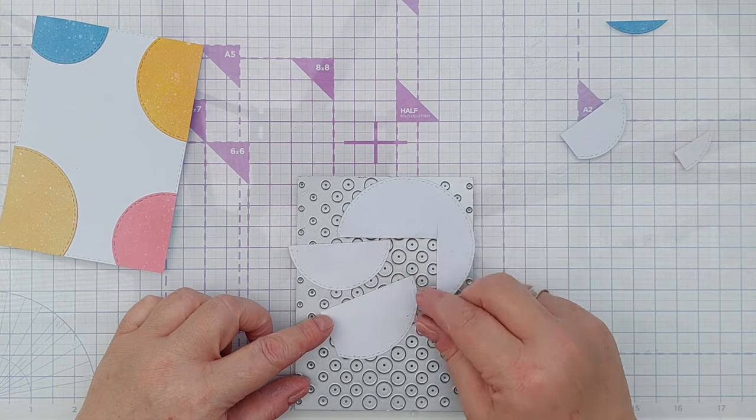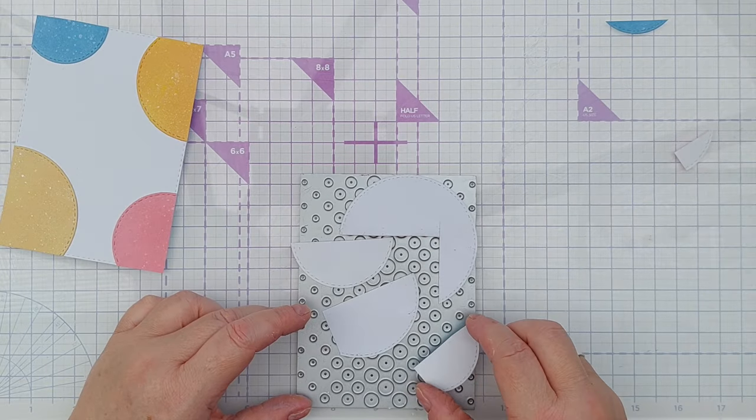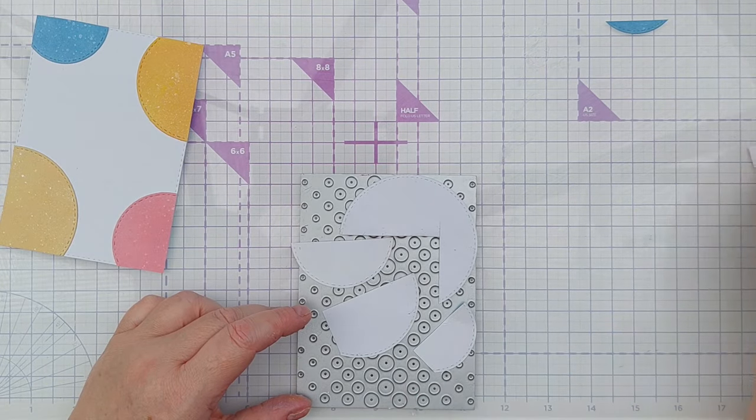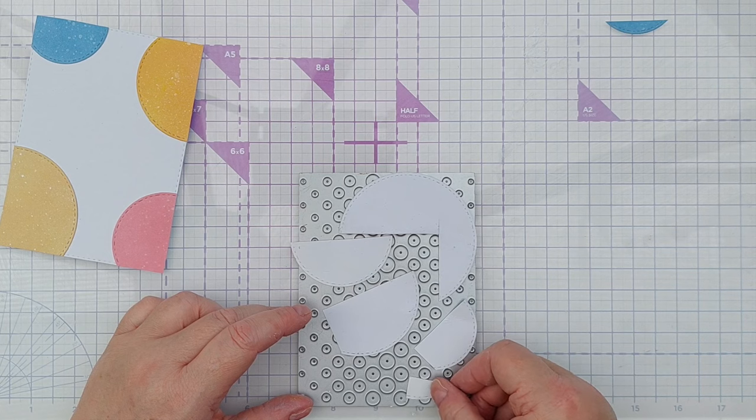I then ran this through the die cutting machine and poked out all the circles from the little holes and sorted them out into colours.